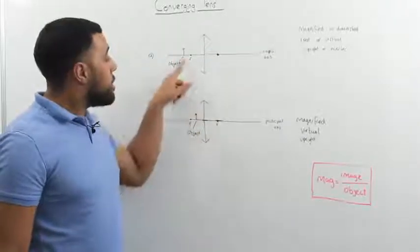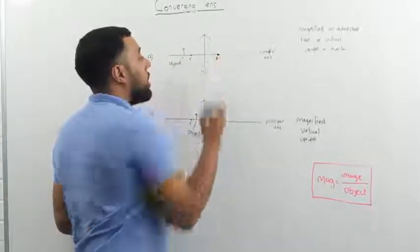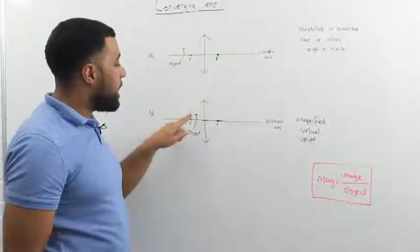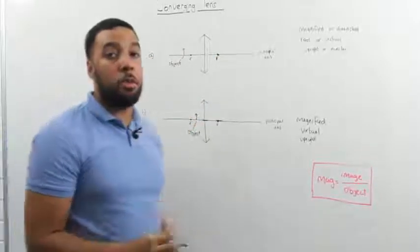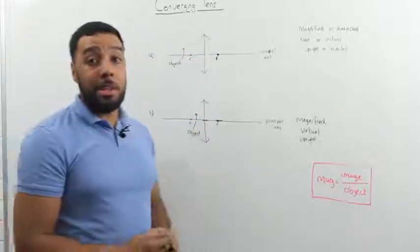And you can see here that the object has been placed behind the focal point. And here the object has been placed in front of the focal point. And we're going to see how that affects the image that we see in the lens.